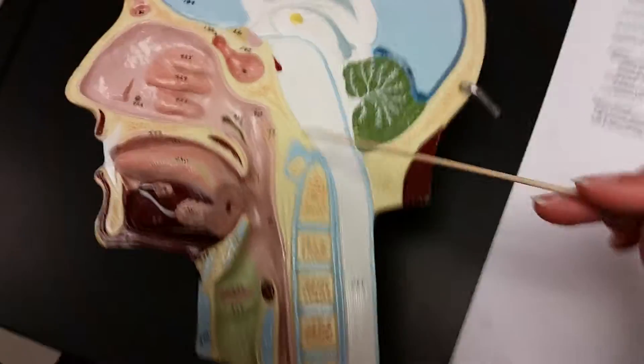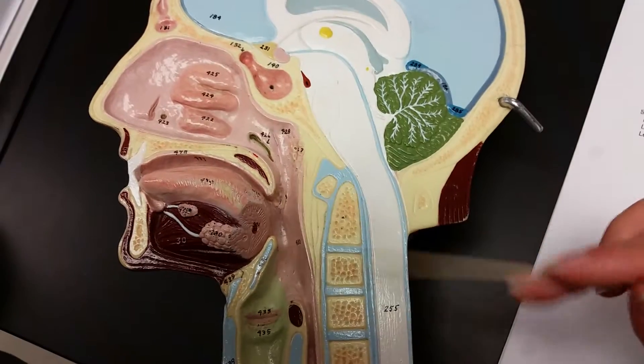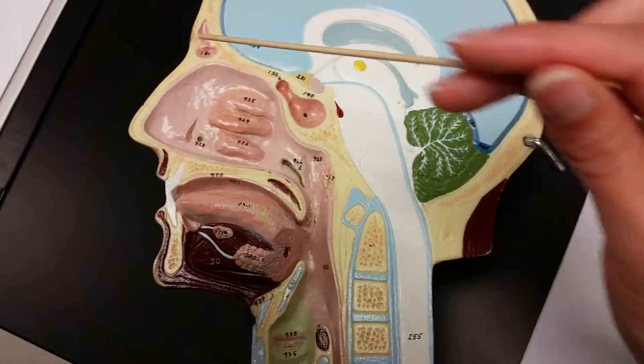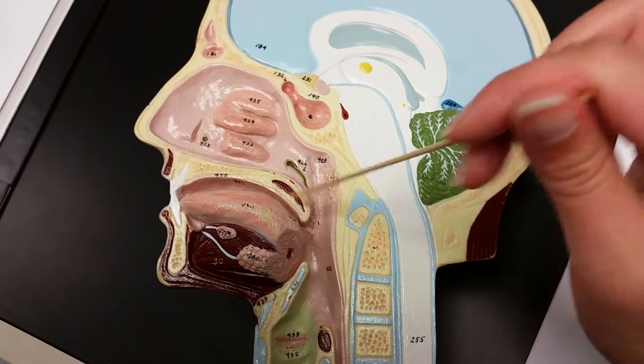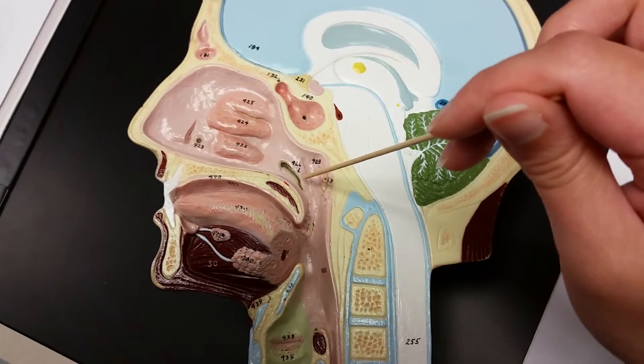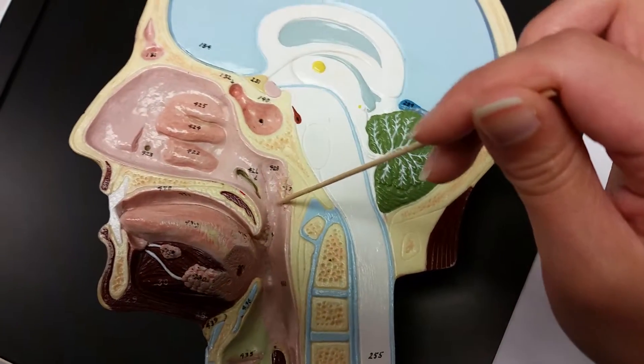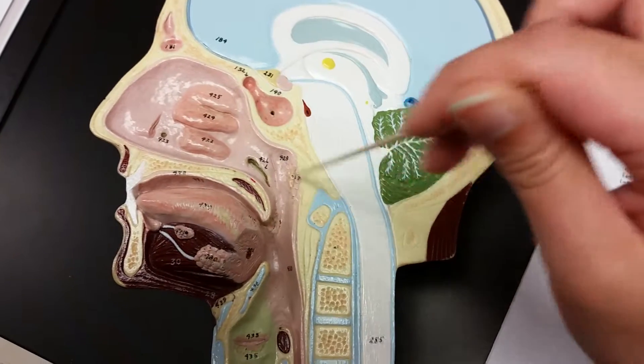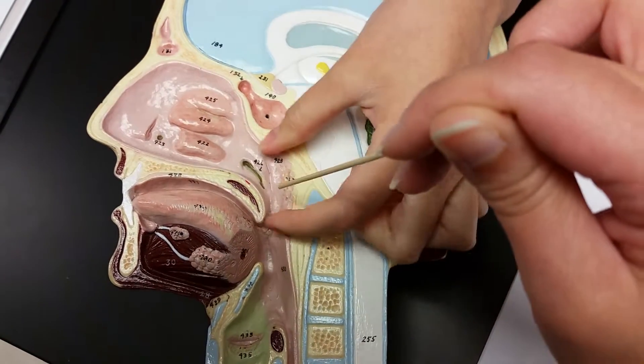The pharynx would be here. The nasopharynx would be... I think it's here. The nasopharynx is right here, right? Yeah. The nasopharynx is here.